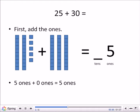So we have five ones in the first group. But 30 doesn't have any ones. It's zero. So we have five ones plus zero ones equals five ones. Right? Five plus zero equals five. So we can write five in the ones spot.